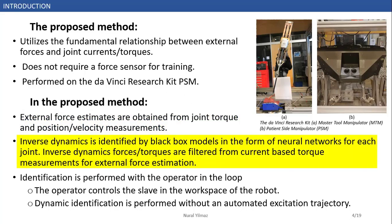Inverse dynamics identification is realized by black box models in the form of neural networks, and we don't need to know exact model parameters. The purpose is that inverse dynamic forces are filtered from torque measurements, then we can obtain external force estimates. Also, the operator controls the slave in the workspace of the robot, as dynamic identification is performed without an automated excitation trajectory. This helps reduce the discrepancy between the surgical workspace and the automatically generated trajectory.